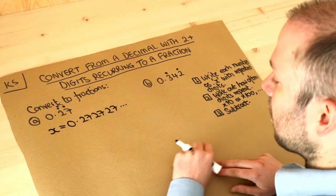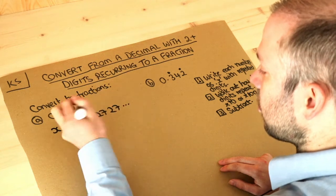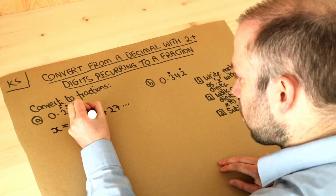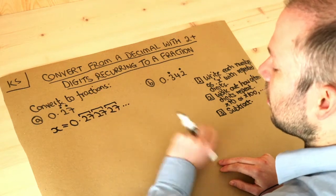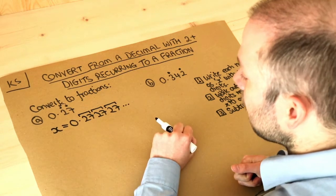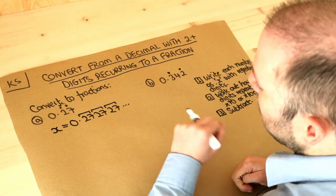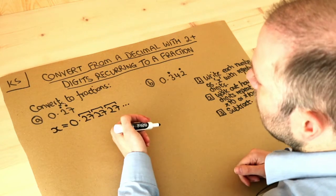Now next we want to work out how often the digits repeat. Can you see, look, we've got 27 27 27. I like to do a little mark at the top here to show that you can see they're repeating every two digits. Now if it's repeating every one digit we times both sides equation by ten, if it repeats every two digits we times both sides by a hundred, if it recurs every three digits we times both sides by a thousand, etc.